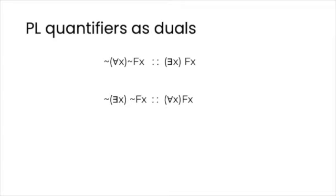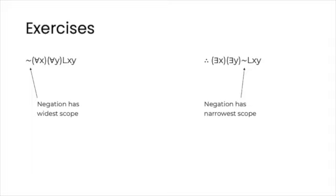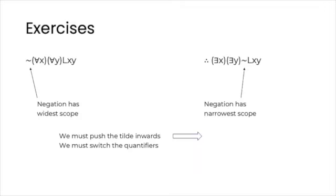Let's work through a full example. Suppose you want to show that this argument is valid. If you take a second to compare the premise and the conclusion, you can see that they are identical in structure, but with two crucial differences. First, whereas in the premise the negation has the widest scope — since it's all the way to the left — in the conclusion it has the smallest scope possible, as it occurs to the right of all quantifiers. Second, instead of universal quantifiers, now we have existential ones. So it looks like we are going to have to push the negation inwards as far to the right as possible, and also switch the quantifiers from universal to existential. Both of these things can be accomplished at the same time with the quantifier negation rule.